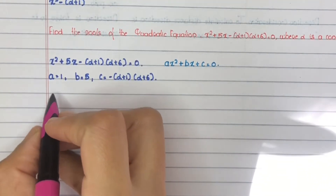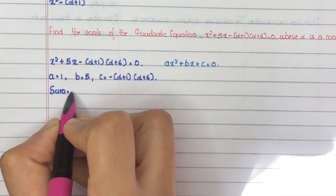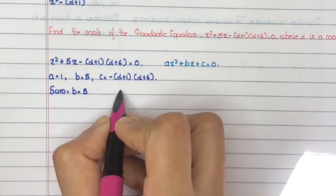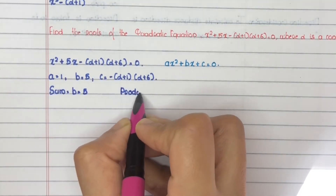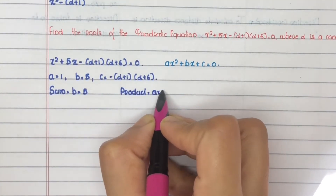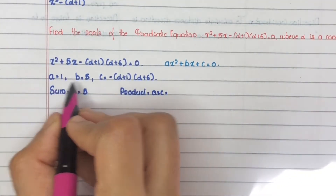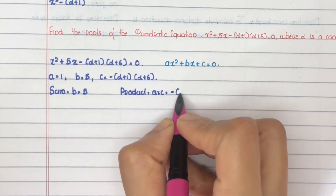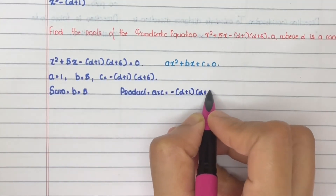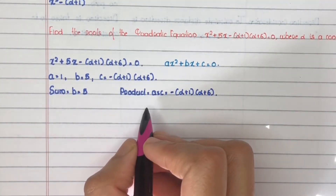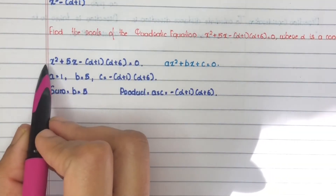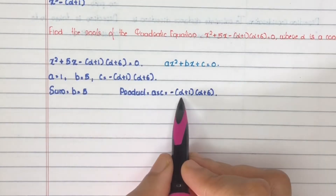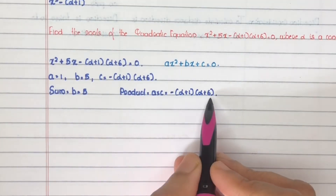Next, find the sum and product. The sum equals b, which equals 5. The product equals a times c, which equals 1 times minus (alpha plus 1)(alpha plus 6). Since the coefficient of x squared is 1, the numbers will be the terms of the product: (alpha plus 1) and (alpha plus 6).